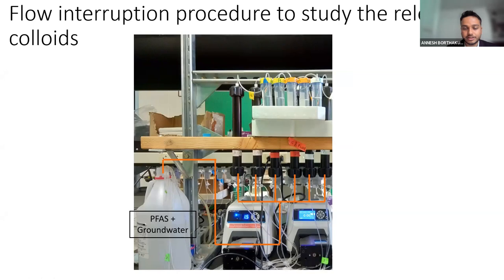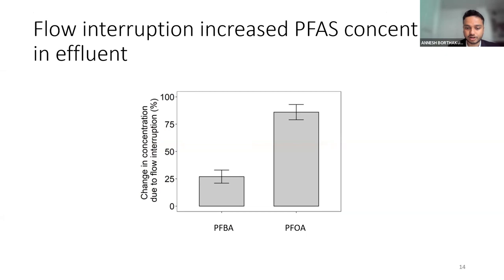After breakthrough, I stopped the flow and let the PFAS in the pore water equilibrate with the soil in the column. Initially, without considering colloid-facilitated transport, we expected that since pore water had higher PFAS concentration than the soil, PFAS would diffuse from the pore water into the soil, causing a drop in concentration when flow restarted. But what we actually observed was a rise in PFAS concentration. Both short-chain PFAS (PFBA) and long-chain PFAS (PFOA) showed increased concentration after the flow interruption.